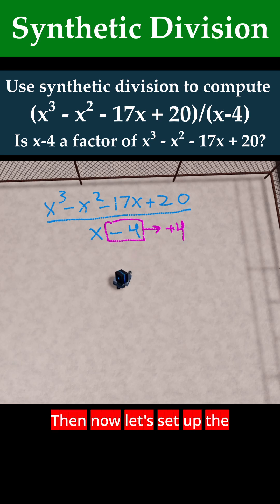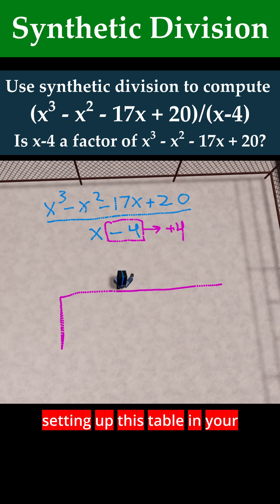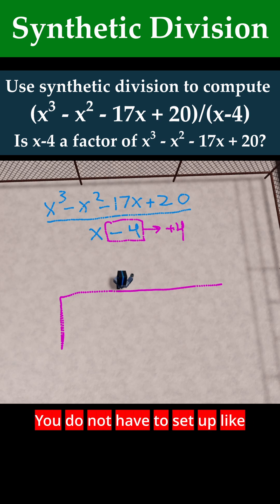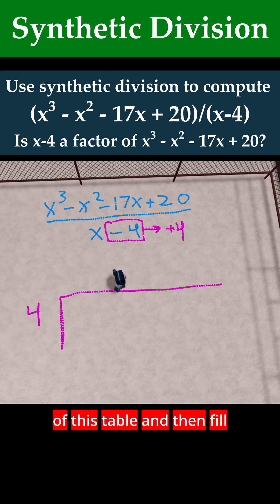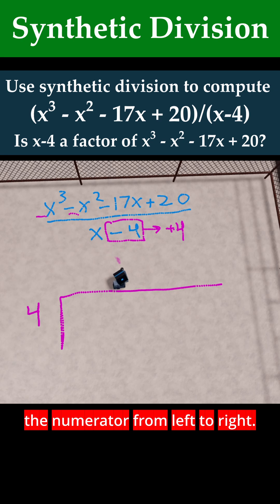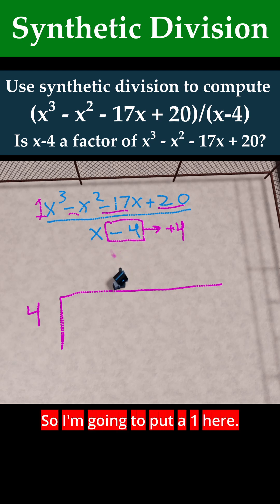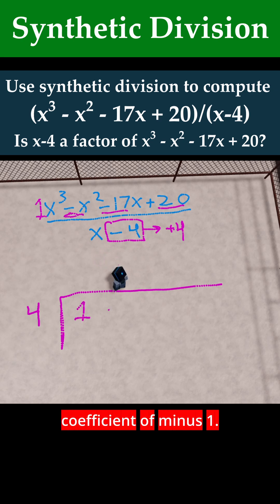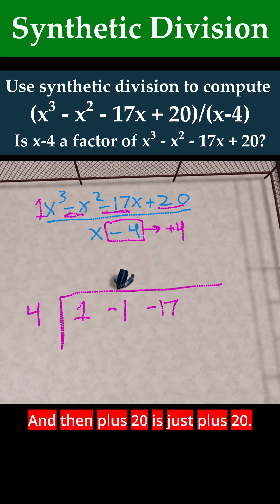Now let's set up the synthetic division table. You may see different ways of setting this up, but the key is to put the 4 on the outside of the table, then fill in the coefficients of the numerator from left to right. x cubed has a hidden coefficient of 1, minus x squared has a coefficient of minus 1, minus 17x has a coefficient of minus 17, and plus 20 is just plus 20.